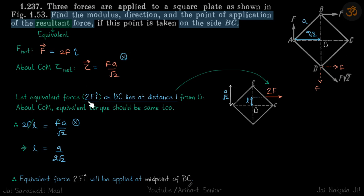Now let equivalent force: because the magnitude and direction of the net force is 2F i cap, wherever that force is on the BC, its magnitude and direction is going to be 2F i cap. So let equivalent force 2F i cap on BC lie at a distance L from O like this.